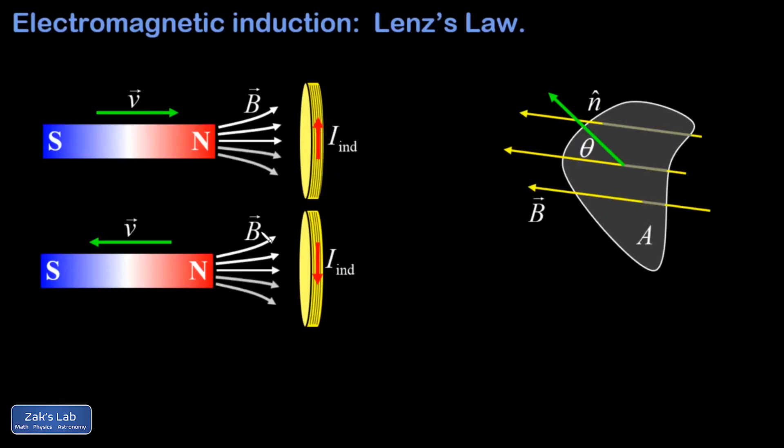Then if we allow things to settle down for a second and we suddenly remove that north pole of the magnet, we'll see current induced in the opposite direction in the coil. So what's going on here? To clarify this behavior, we first introduce the idea of magnetic flux.